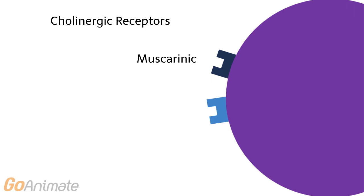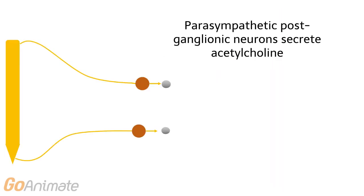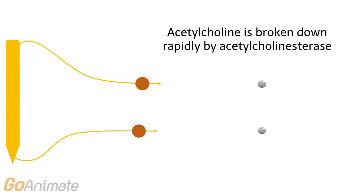There are two types of parasympathetic receptors. Both are cholinergic and include muscarinic and nicotinic receptors. Postganglionic parasympathetic neurons secrete acetylcholine, which is broken down by the enzyme acetylcholinesterase.